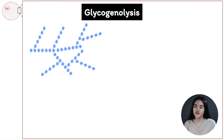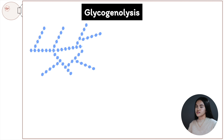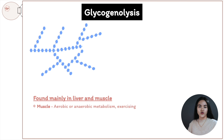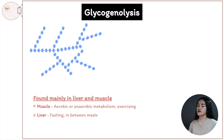Before we go through the process, let's first discuss this polymer of glucose and its structure. Glycogen is an animal polysaccharide that's mainly found in liver and muscle. When we have excess glucose it's turned into this polymer for storage. In muscle we can use it for aerobic or anaerobic metabolism when we're exercising, because we need that energy to support muscle contraction.